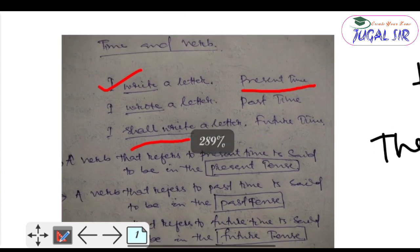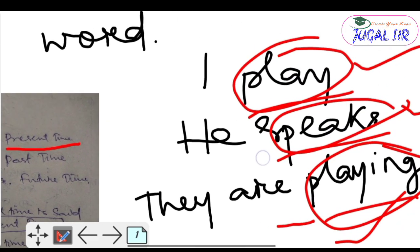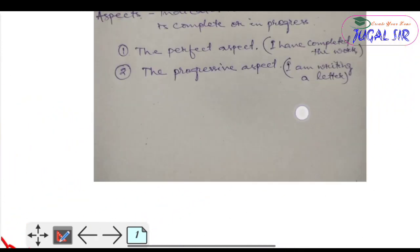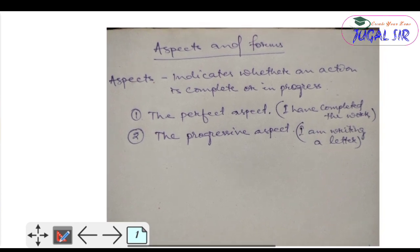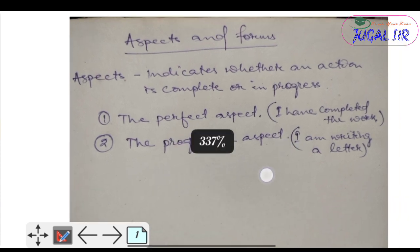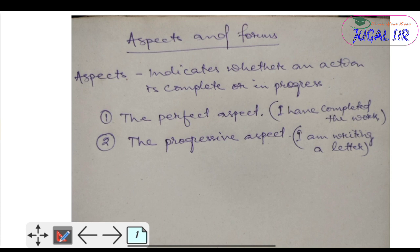So we now know that tense is created based on time. Now let's discuss more about tense — specifically the aspects and forms of tense. Aspects indicate whether an action is complete or in progress.